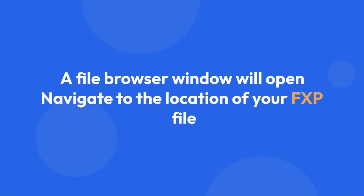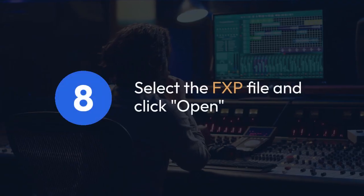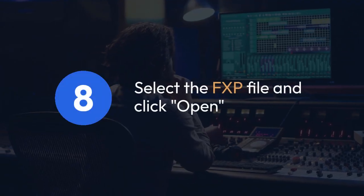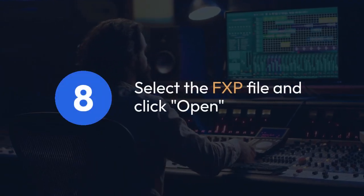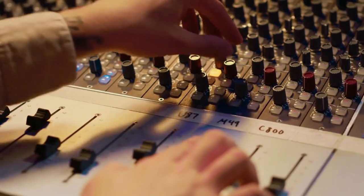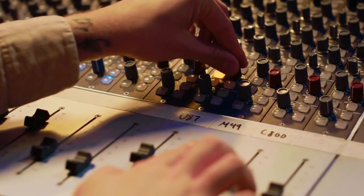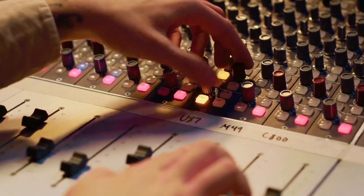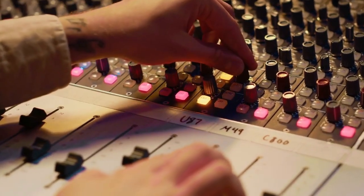A file browser window will open. Navigate to the location of your FXP file. Select the FXP file and click Open. FL Studio will now load all the settings from the FXP into the selected effect.